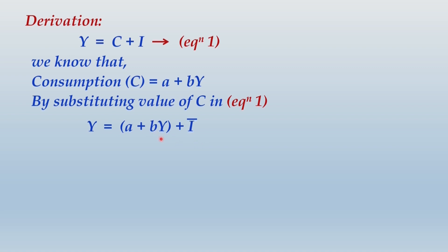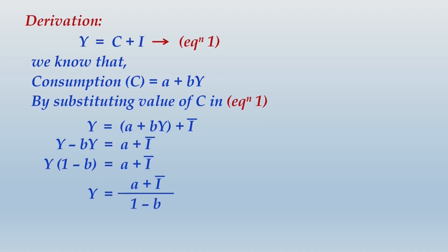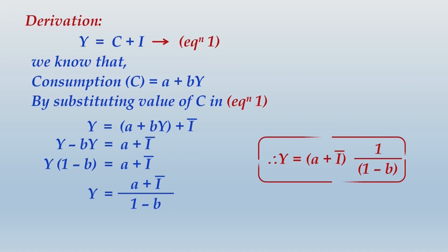Rearranging: Y − bY = a + Ī, so (1 − b)Y = a + Ī, and finally Y = (a + Ī) × [1 / (1 − b)]. Here, 1 / (1 − b) is the investment multiplier K. So when the investment multiplier is applied to (a + Ī), we get the total income — confirming our derivation.